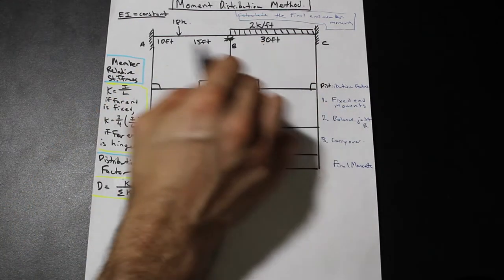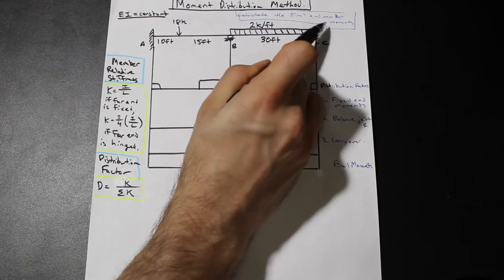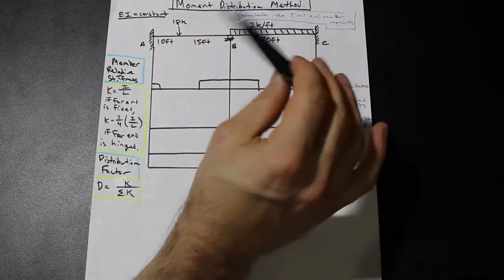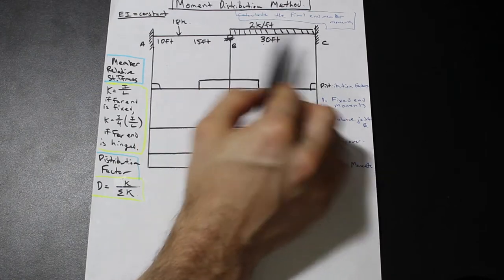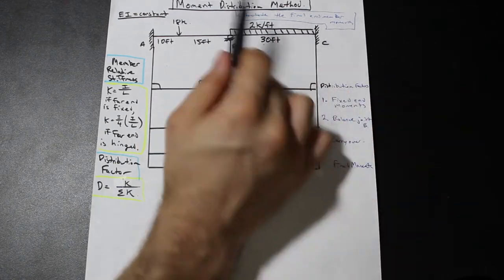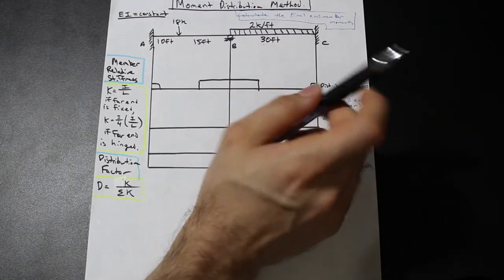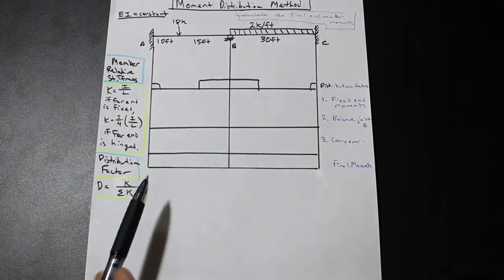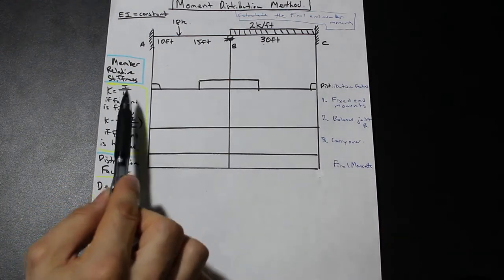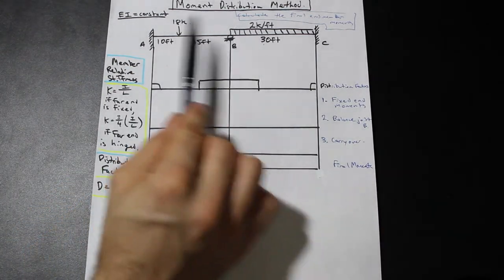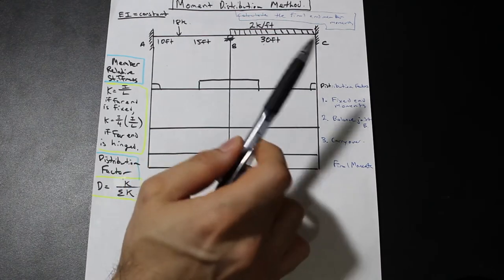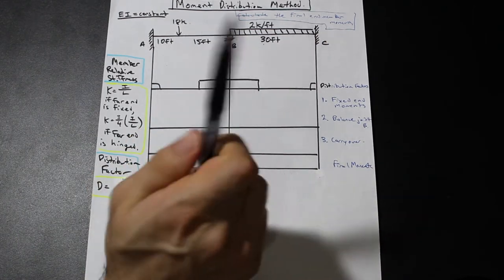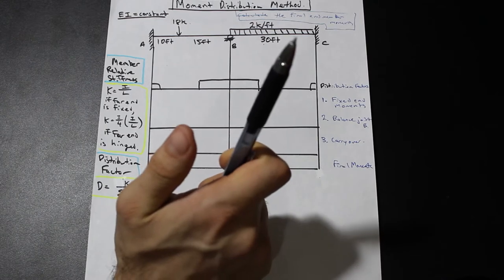We have a continuous beam here and we're asked to calculate the final end member moments of this beam. So when we separate it into A-B and B-C, what are the end moments when the beam is cut like that? The moment distribution method is a method that just takes into account the bending stiffness of each member — that's how it calculates end moments.